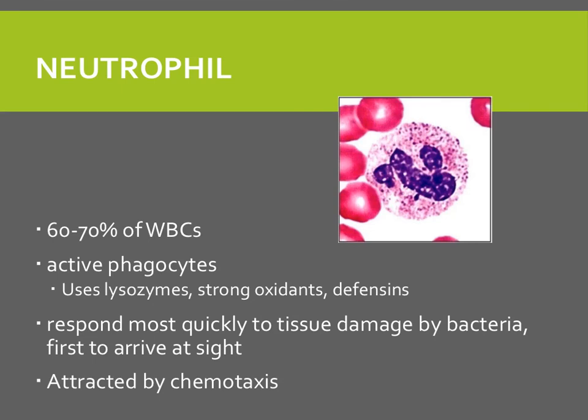Neutrophils make up the largest portion of white blood cells — 60 to 70% of them. They are active phagocytes and use lysozyme, strong oxidants, and defensins. They respond most quickly to tissue damage by bacteria, as they are the first to arrive at the site of infection. They are attracted by chemotaxis, or chemical signaling from other cells.